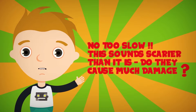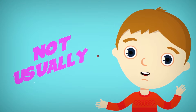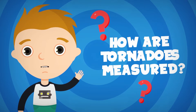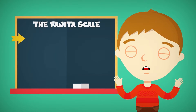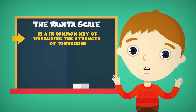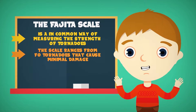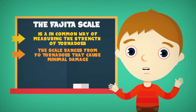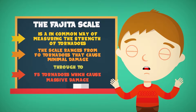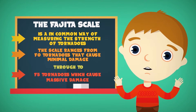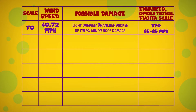Do they cause much damage? Not usually. But how are tornadoes measured? The Fujita scale is a common way of measuring the strength of tornadoes. The scale ranges from F0 tornadoes that cause minimal damage through to F5 tornadoes which cause massive damage. F0: 40 to 72 miles per hour — light damage, branches broken off trees.